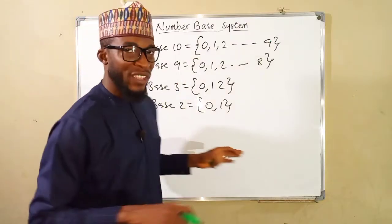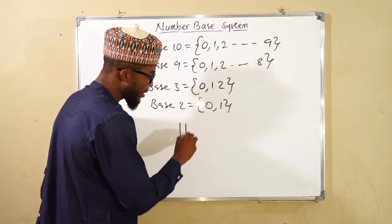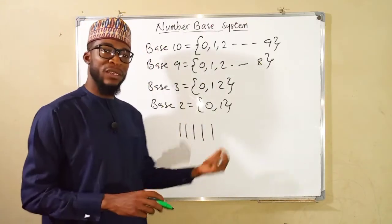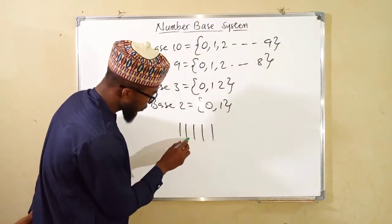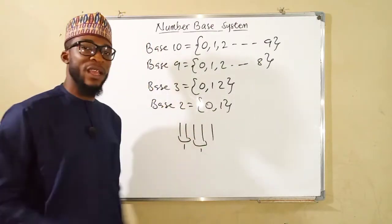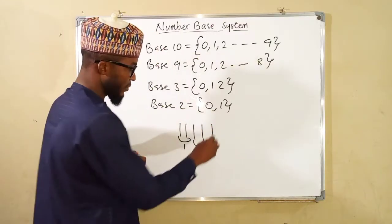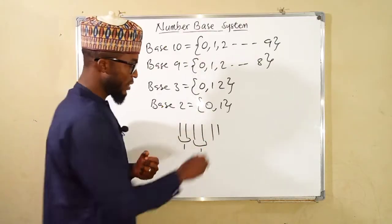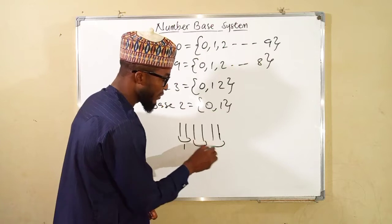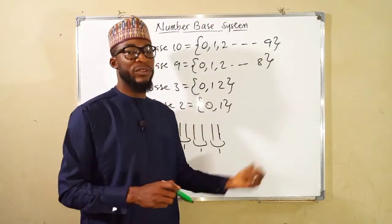Now let me explain the concept of bundles. Suppose we have five items and we want to group them in twos. Every two form a bundle, and we have an extra which we call a unit. If you add an extra single item, that single item links up with the unit left from a complete bundle, and hence we say we have three bundles.